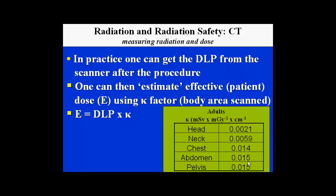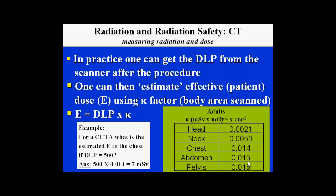In practice, one can obtain the dose length product directly from the scanner after the procedure. One can then estimate effective patient dose using the kappa factor, depending upon the body region scanned: effective dose equals DLP times kappa. Kappa values are available for head, neck, chest, abdomen, and pelvis. For example, for a CCTA with a DLP of 500, using the chest kappa factor of 0.014, we find the patient received seven millisieverts effective radiation dose for that examination.